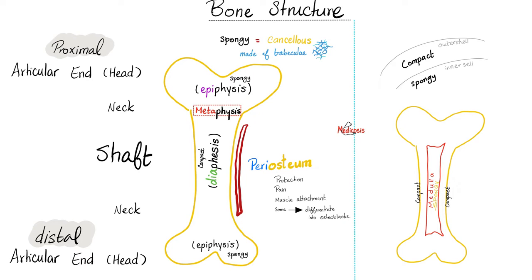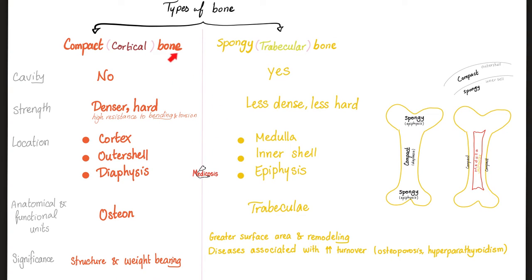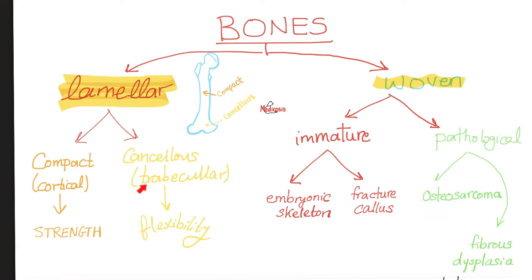Structurally speaking, we have two types: compact bone, such as the one in the shaft, as well as cancellous or trabecular or spongy bone in the proximal and distal ends. Both the compact and cancellous bone are collectively known as lamellar bone, which is normal in adults. What is not normal in adults is woven bone, because woven bone is either immature or pathological.